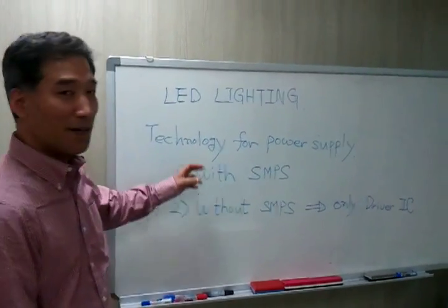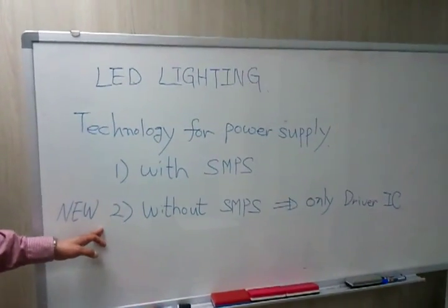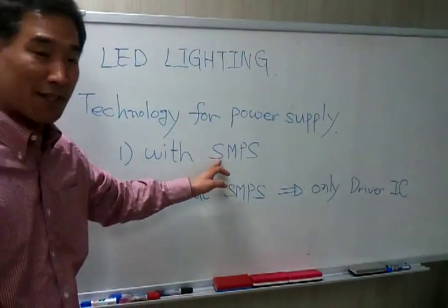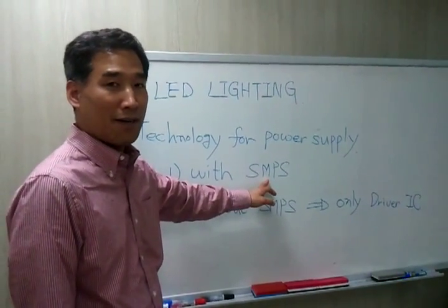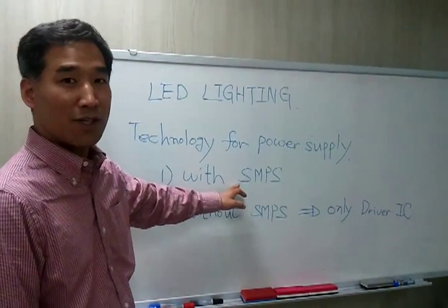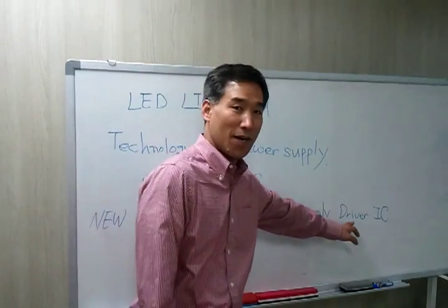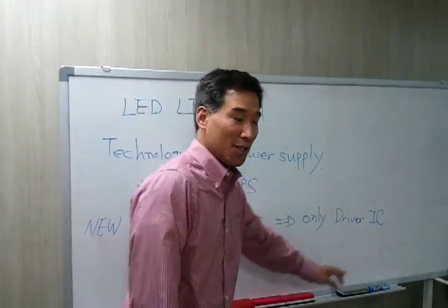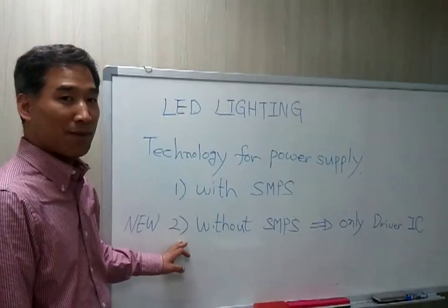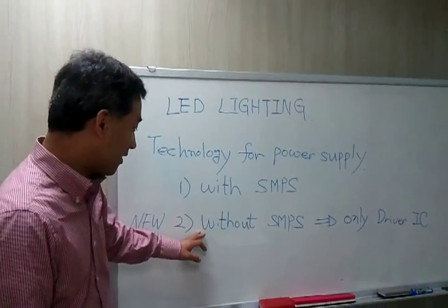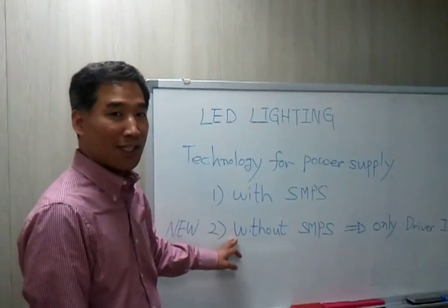I would like to introduce LED lighting technology. First of all, there are two kinds of technologies. The first one is with SMPS and the other one is without SMPS. SMPS is well known for the power supply — it is normal technology worldwide. But now we have developed without SMPS technology, using only a driver IC plus boost diode. This technology is very high technology, innovated with a worldwide patent. We have also introduced it to many countries for LED lighting.